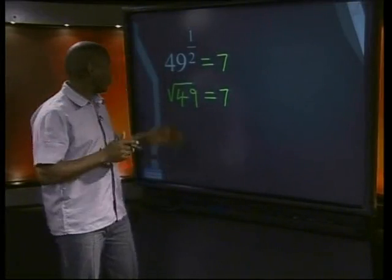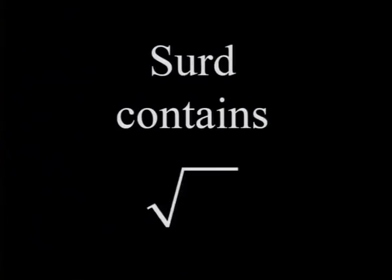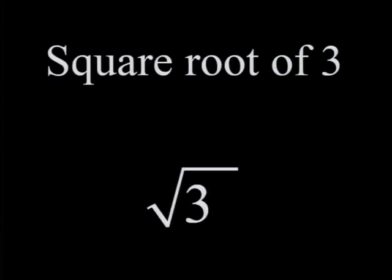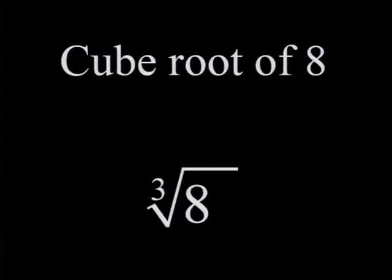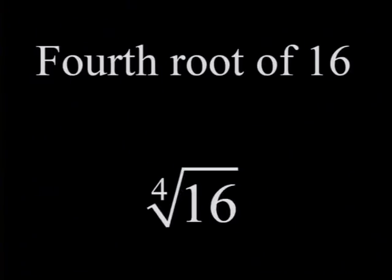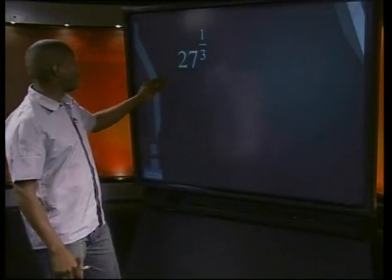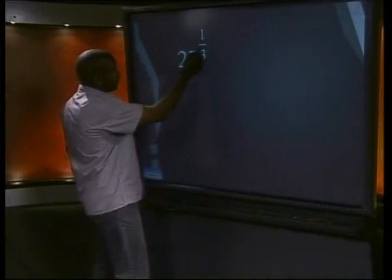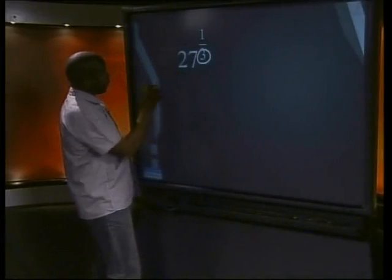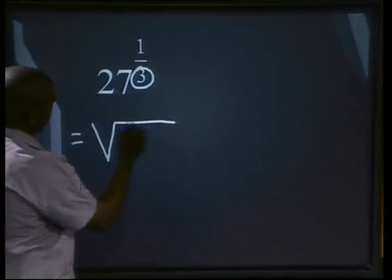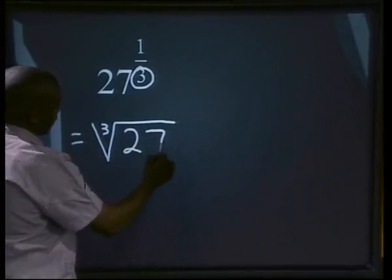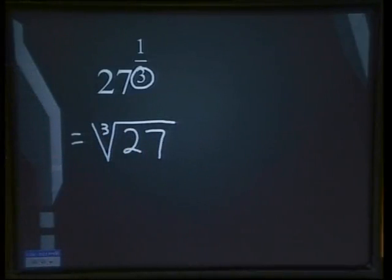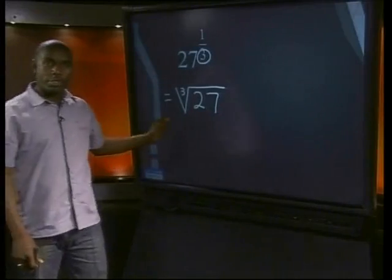We call the square root of 49 a surd. A surd is an expression containing a root sign. We read expressions like these as the square root of 3, the square root of 8, or the fourth root of 16. How will we write 27 to the power of 1 over 3? The denominator becomes the root sign, so in this case we'll have the cube root of 27. This is how you write it with a root sign.